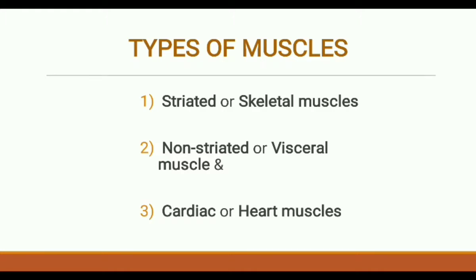Types of Muscles. In vertebrates there are three kinds of muscles: Striated Muscles or Skeletal Muscles, Non-striated or Visceral Muscles, and Cardiac or Heart Muscles. The endoskeleton is attached to the striated muscle. Non-striated muscles are seen in internal organs, and cardiac muscles are present in heart walls.